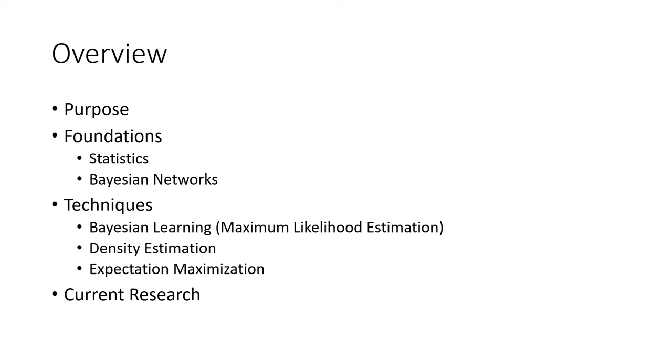Just a quick overview before we get too much further in. I wanted to highlight the purpose and then give a bit of foundations, both in statistics and then specifically discussing Bayesian networks. Going from there, we'll actually talk about the three techniques or classes of techniques that I thought would be most relevant. They're kind of the greatest hits of statistical inferencing. So finally, after that, we will look at current research, which would just be a couple of papers that use some of these techniques to solve different problems.